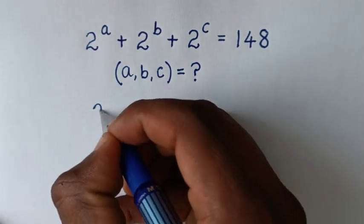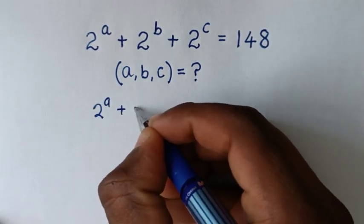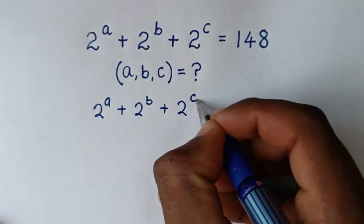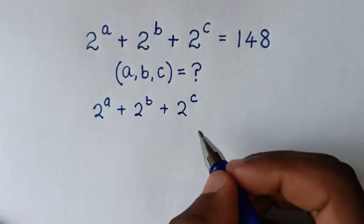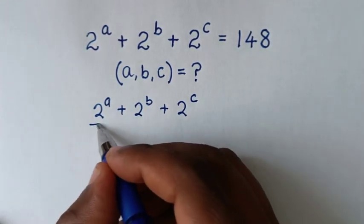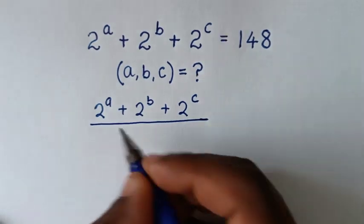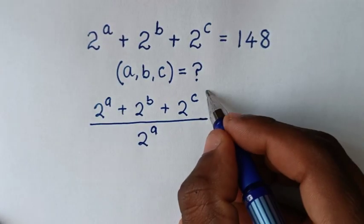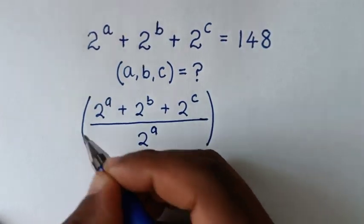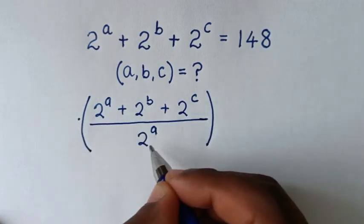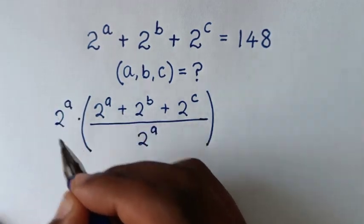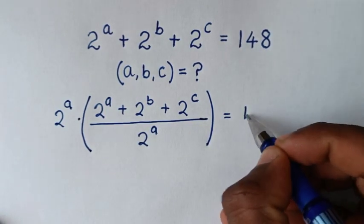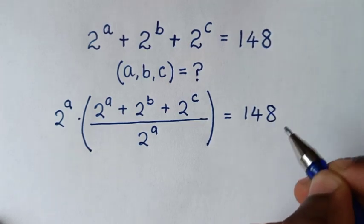From our problem, which is 2 power a plus 2 power b plus 2 power c, in the first step we will divide by 2 power a, and then bracket, we multiply by this 2 power a, which is equal to 148.